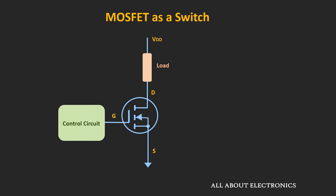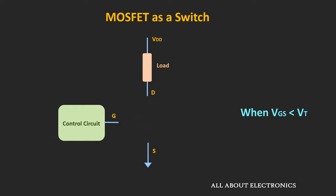This is the basic circuit of the N-type MOSFET used as a switch. The load is connected between the supply and the drain terminal, and the control input is applied between the gate and the source terminal. This control signal can be applied directly through a microcontroller or using a separate driver circuit. When the control input is low, the MOSFET will act as an open circuit, and no current will flow through the load.